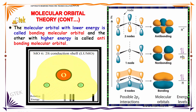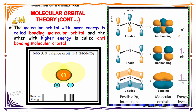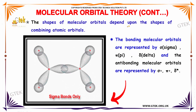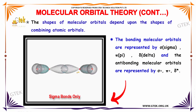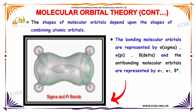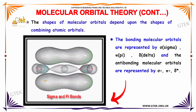Here is the energy level. This is called pi, this is nb (non-bonding), and this is pi star, which indicates anti-bonding. The shapes of the molecular orbitals depend upon the shape of the combining atomic orbitals. Here is the pi bond — this is the structure of a pi bond — and a combination of a sigma and pi bond. The bonding molecular orbitals are represented by sigma, pi, and delta, and the anti-bonding molecular orbitals are represented by sigma star, pi star, and delta star.